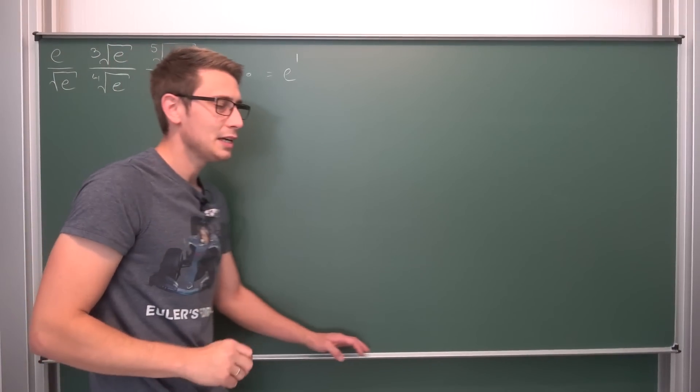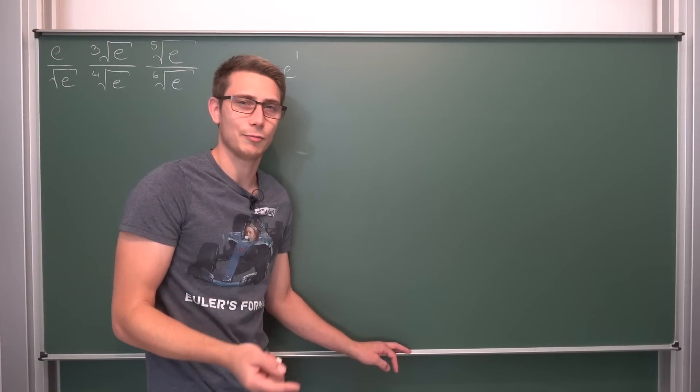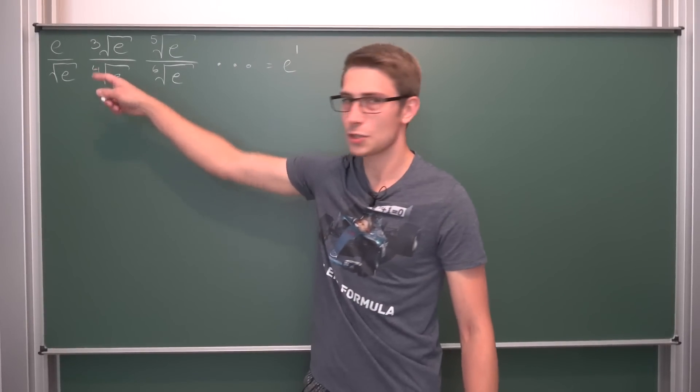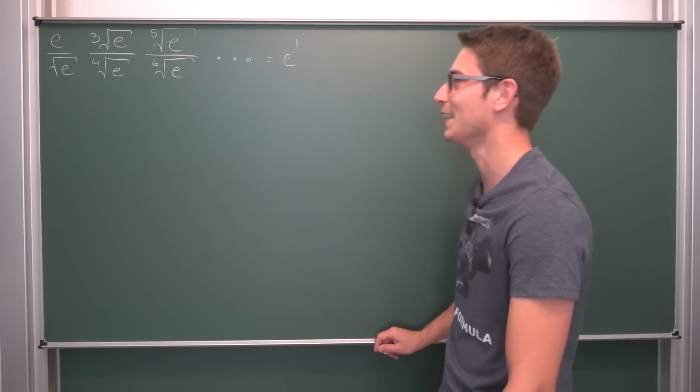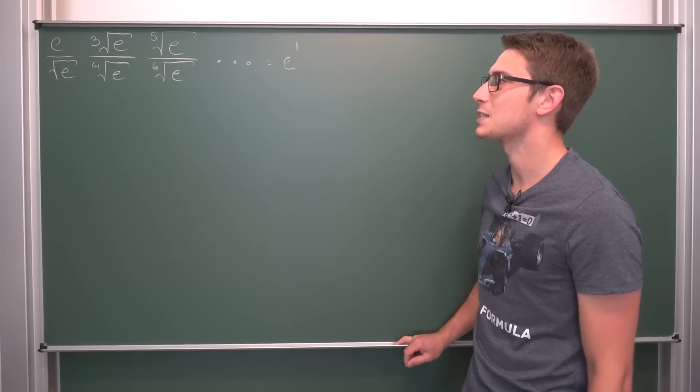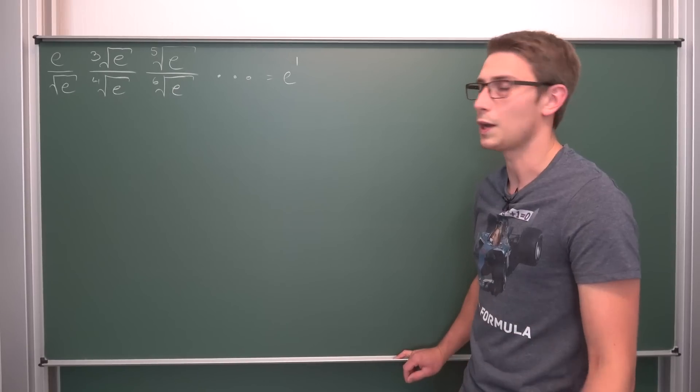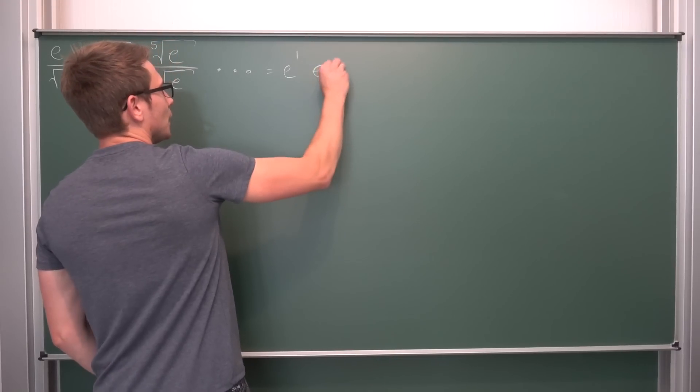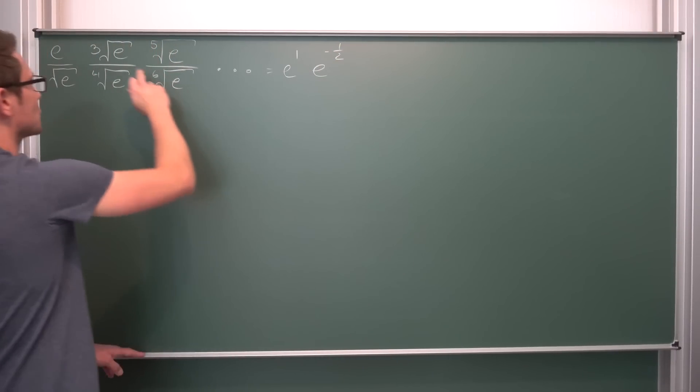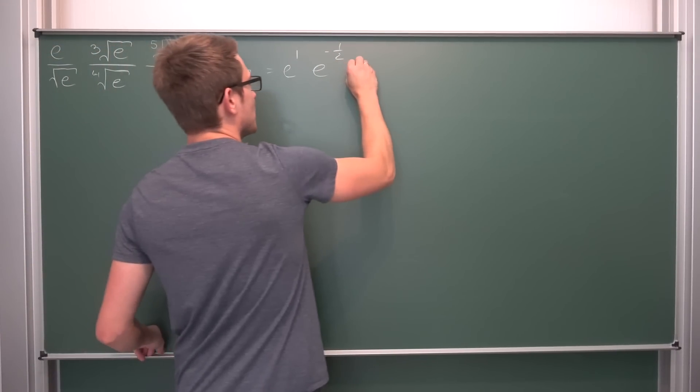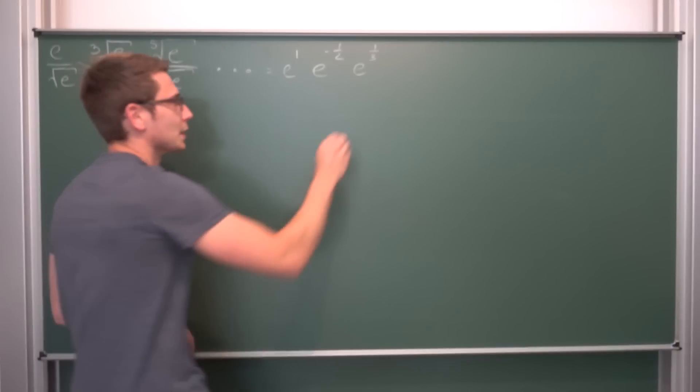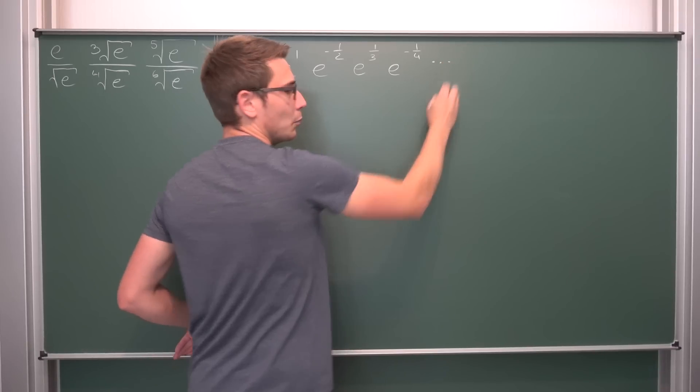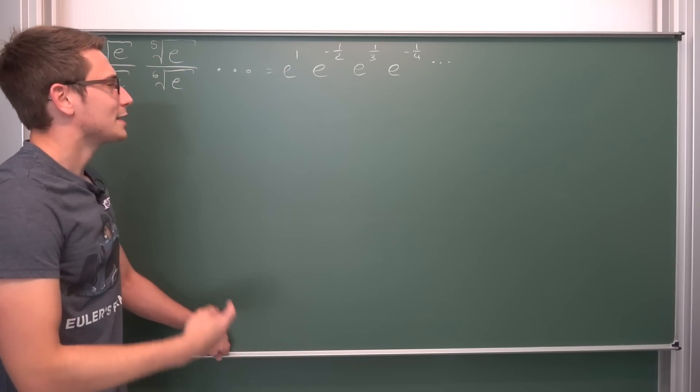Let's grab some chalk and rewrite this because all those roots can be rewritten using powers. e is the same as e to the first power. The square root of e is normally e to the one-half power, but since it's under the vinculum, it's one over e to the one-half, so e to the negative one-half power. Cube root of e is e to the one-third, times e to the negative one-quarter and so on, multiplied up until infinity.